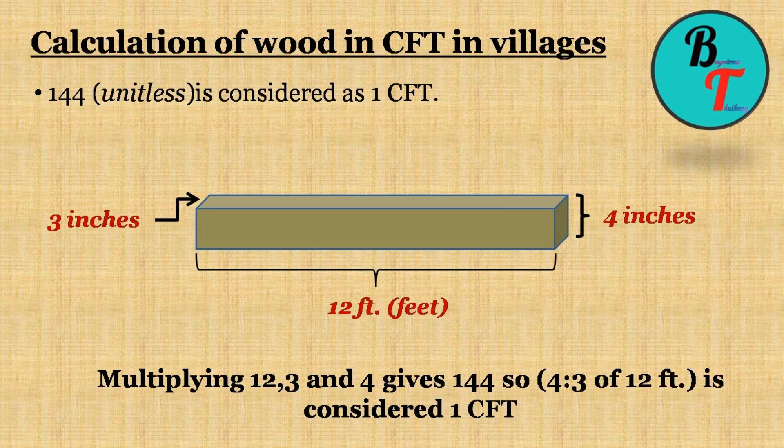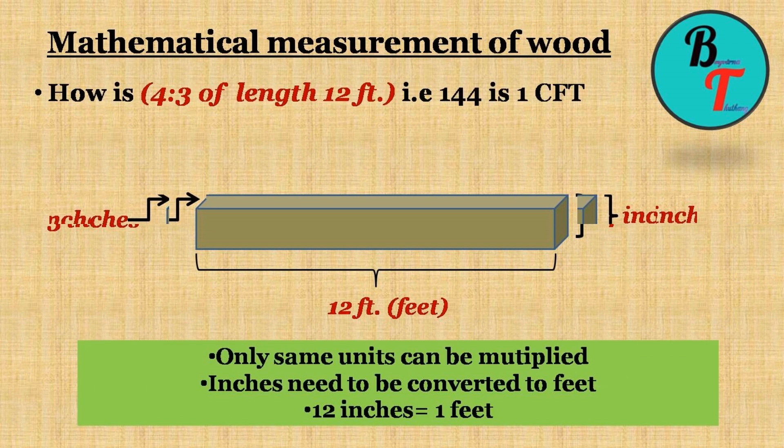In certain villages they say 144 without mentioning any unit is one CFT. Unknowingly they multiply the breadth, height, and length, that is 3 into 4 into 12 without assigning the units. The product comes as 144. Let us now prove mathematically how 4 is to 3 of length 12 feet is one CFT.